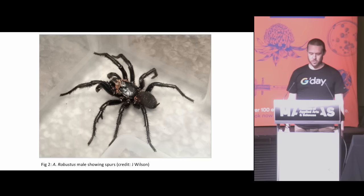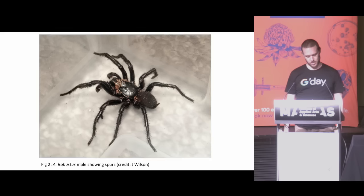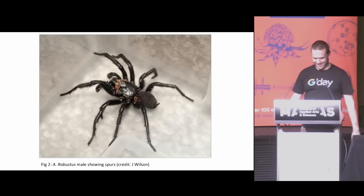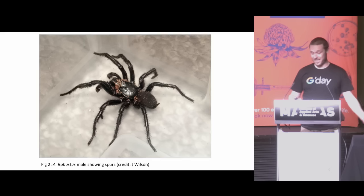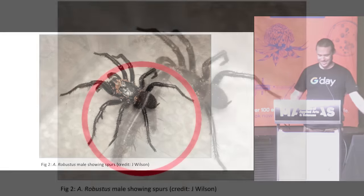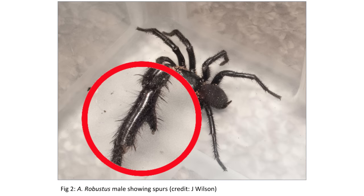Conventional biological theories suggest that these tibial spurs arose through natural selection — through sexual selection — and that they protect the male from the fangs of the larger female during mating. That's the theory. It's ridiculous, but that's the theory. And we can see the spurs here in a little detail.